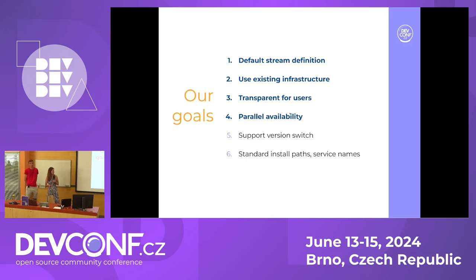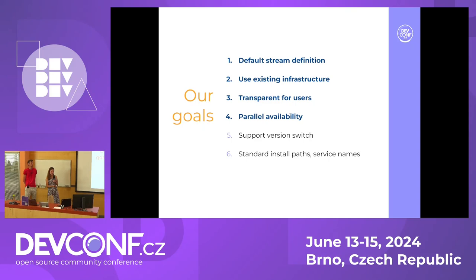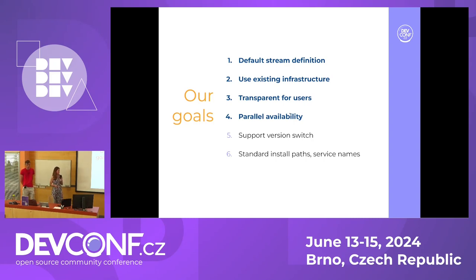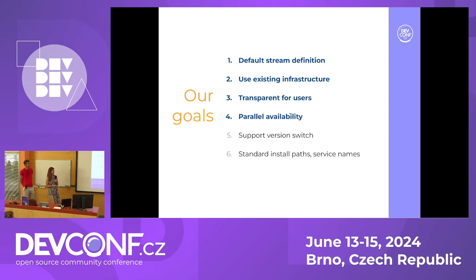We also aimed for parallel availability and not installability, because we wanted to maintain standard install paths and service names - unlike software collections, which used non-standard paths. We also wanted to support version switching, so for example, if you have PostgreSQL 16, you can switch to PostgreSQL 17 or later versions.